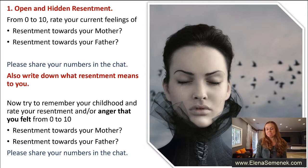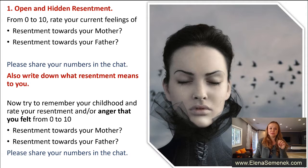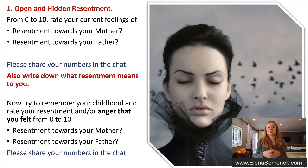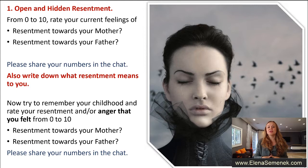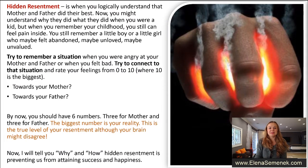Now you have two numbers. The next question: try to remember your childhood and rate your resentment or anger from 0 to 10. The first number is resentment or anger towards your mother, and the second is towards your father. So these are two new numbers — the first two were about your current feelings, and the second two are about your childhood. I see your questions in chat and will get back to them shortly.